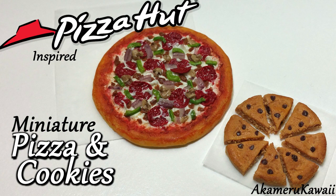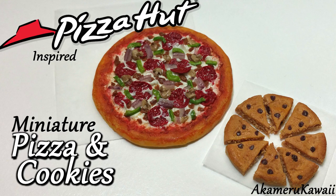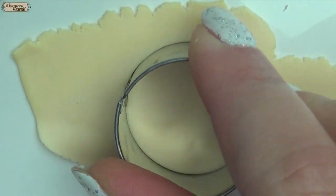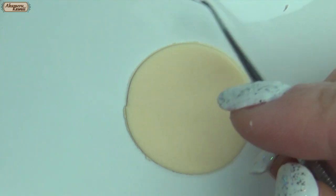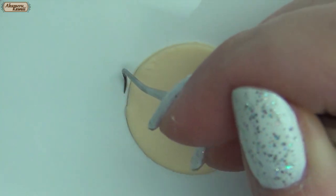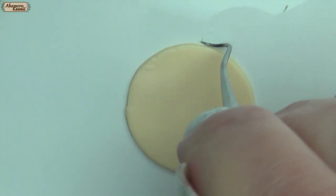Hi guys, today we're doing this Pizza Hut inspired miniature pizza and cookies. Roll out some dough colored clay and cut a circle. Smooth out the edge and roll it up a bit.